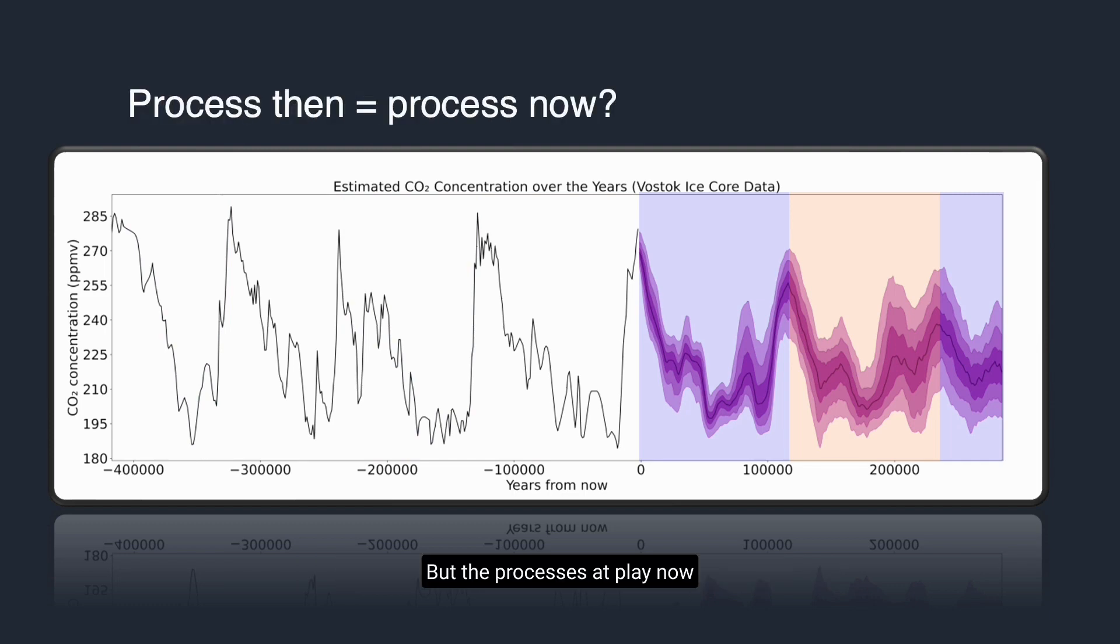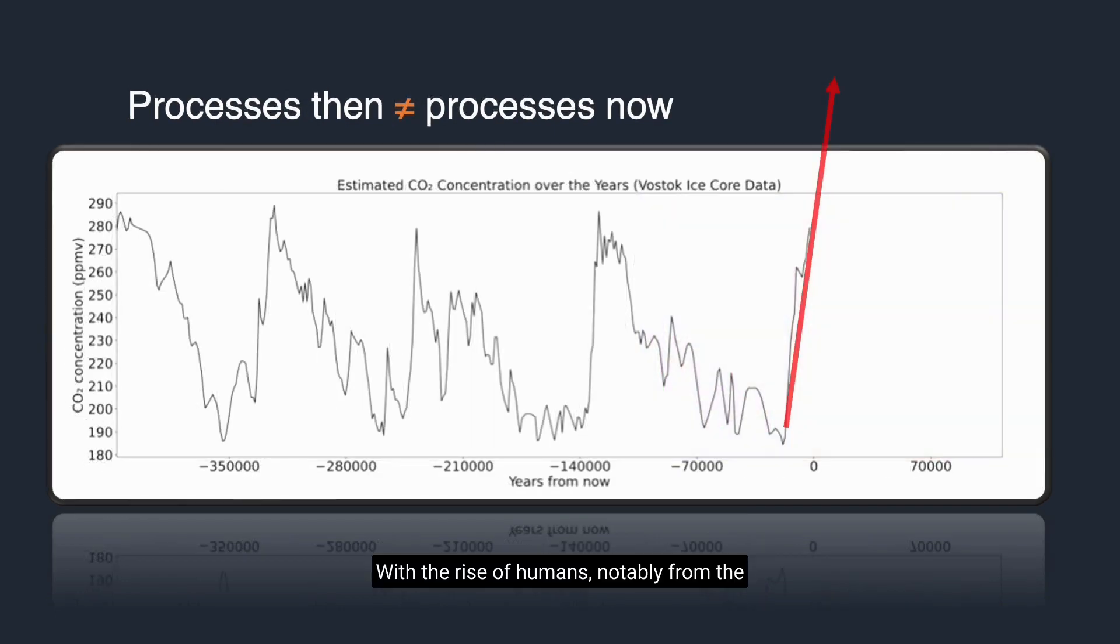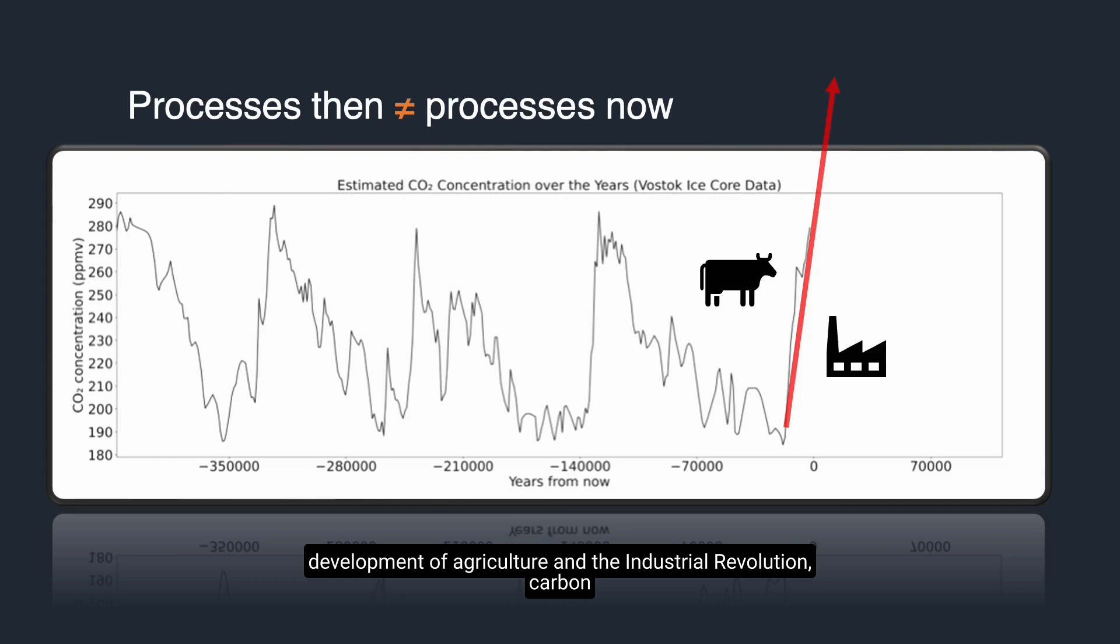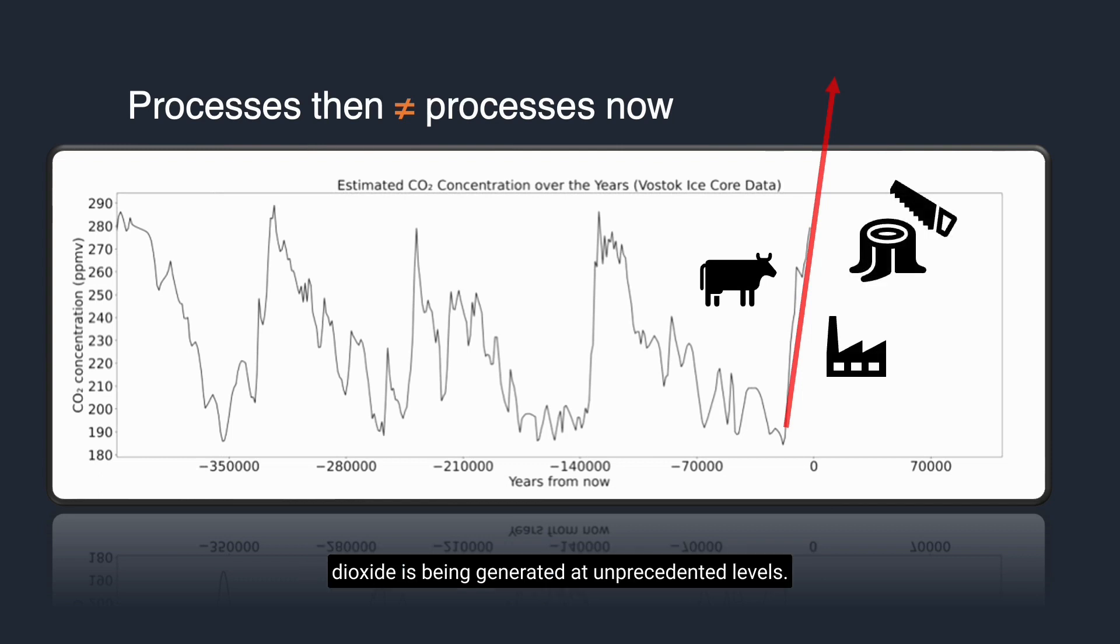But the processes at play now are unique in Earth's history. With the rise of humans, notably from the development of agriculture in the industrial revolution, carbon dioxide is being generated at unprecedented levels.